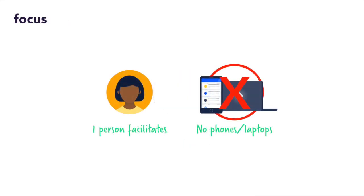Number two: focus. There should be one person facilitating the session, ideally someone other than the product manager, so they can drive the discussion. A good practice is to involve a product manager from another team to run the session. There should be no phones or laptops out except for the facilitator. A phone or laptop stack is a good technique for doing this — as people enter the room for the story mapping session, all phones and laptops are put in a pile to avoid distractions.